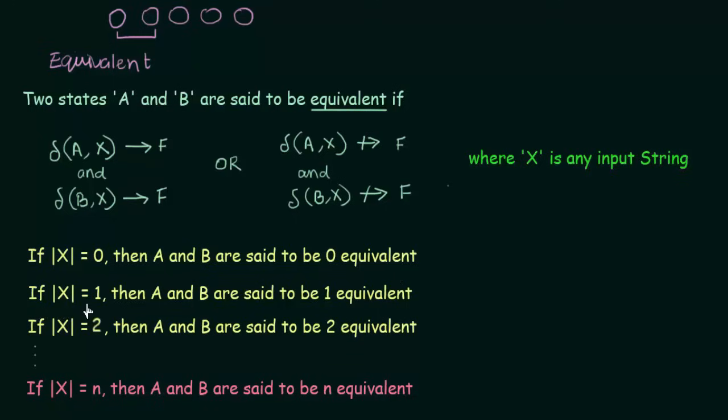And if the length of X is equal to 1, then A and B are said to be 1 equivalent. So, in general we can write that if the length of the string X is equal to n, then A and B are said to be n equivalent. So, these are the types of equivalences that we have. And we have already studied when are two states A and B said to be equivalent. It is with these conditions. When seeing a particular input string X, if both A and B either go to the final state or do not go to any final state, then they are said to be equivalent.